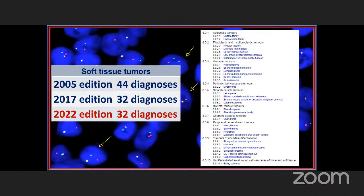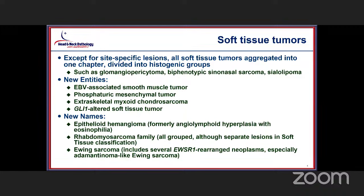Last time I went over organ-specific sites for the first talk, and now I'm going to go over more of the generalized topics. We're going to start off with the soft tissue tumor category, with a similar number of diagnoses from the 2017 edition. However, what we chose to do was to put all of the soft tissue lesions into a single chapter. There are some exclusions — things like glomangiopericytoma or biphenotypic sinonasal sarcoma, which are specific to the sinonasal tract, and sialolipoma, which occurs specifically within salivary glands.